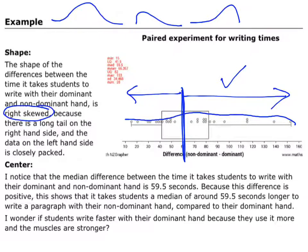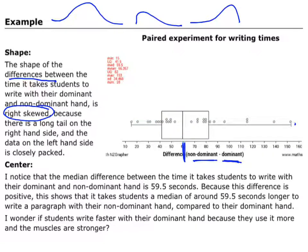So when I'm writing the sentence, notice that I've talked about the shape of the differences between the time it takes to do it with the non-dominant and dominant hands. That difference is right skewed. And then I've justified that by saying there's a longer tail on the right hand side. Okay, so that's the first step, talking about the shape.